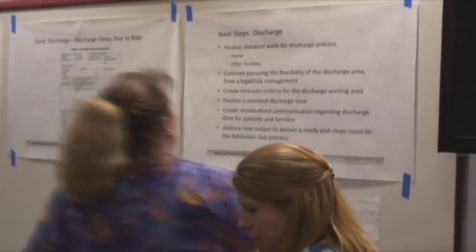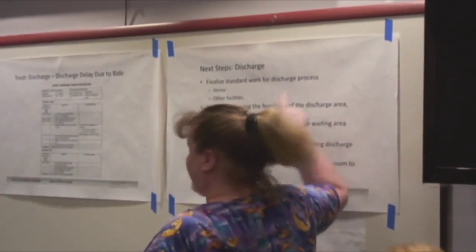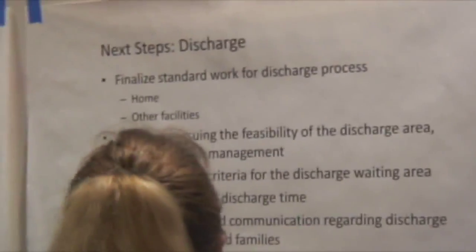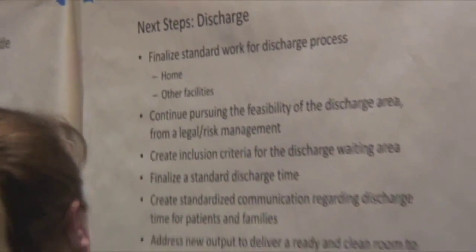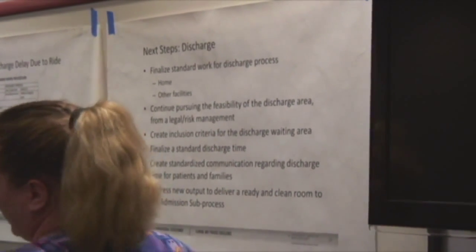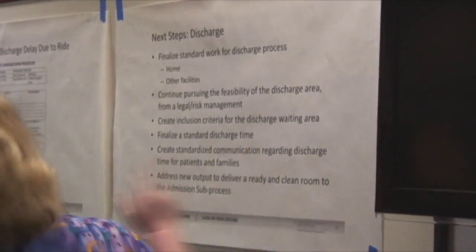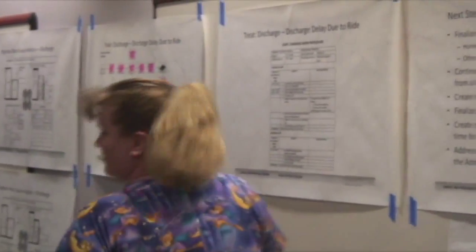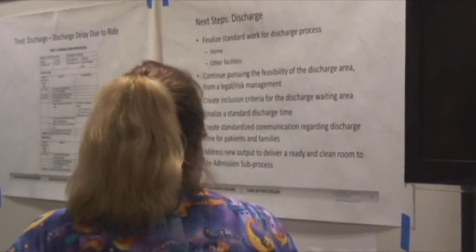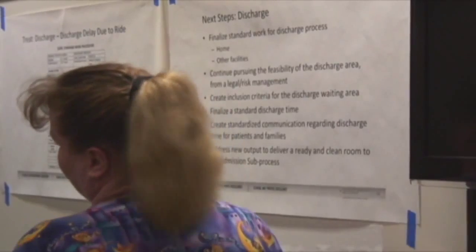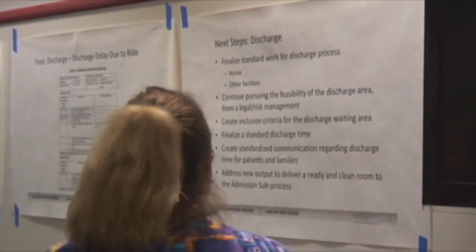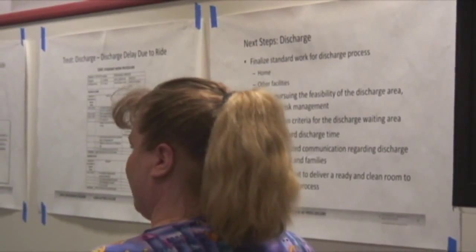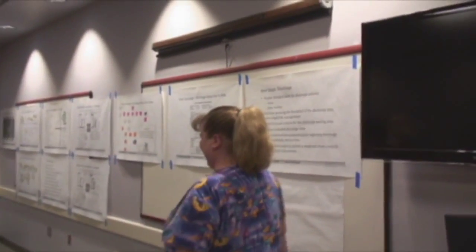Our next steps include finalizing standardized work for discharge to home and other facilities, continuing to pursue a feasible discharge waiting area that is safe for patients with good inclusion criteria, working with teams to finalize the discharge time plan, working on signage to let families know the discharge time, and addressing the issue of rooms being reported ready when they're not — we're going to work on that with admissions.